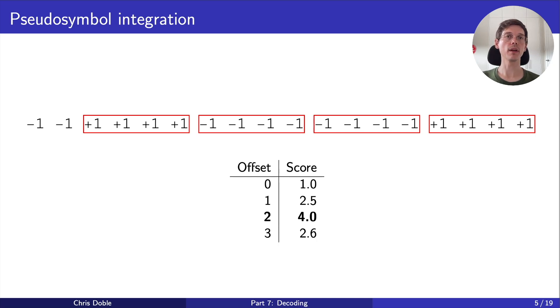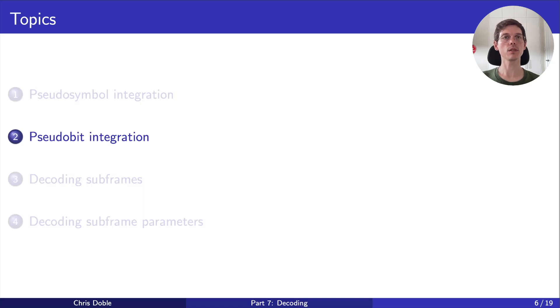Next, we need to determine how pseudo-bits map to binary bits, and how to group them into subframes. This process is called pseudo-bit integration. But how can we do this when BPSK modulation is inherently ambiguous? Well, it's possible because each subframe starts with a fixed 8-bit sequence, called the preamble.